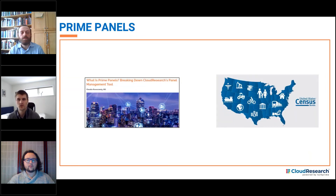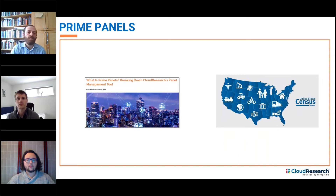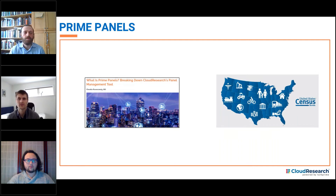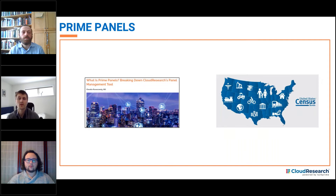In addition to our MTurk Toolkit, Cloud Research offers access to participants through our Prime Panels platform, which is a separate and much larger platform for online data collection. Similar to Lucid or Qualtrics, Prime Panels aggregates hundreds of online panels together and allows researchers to access more than 50 million participants worldwide, which makes it especially useful when researchers want to gather a very large or more representative sample, or to target participants based on very narrow and specific demographic criteria.